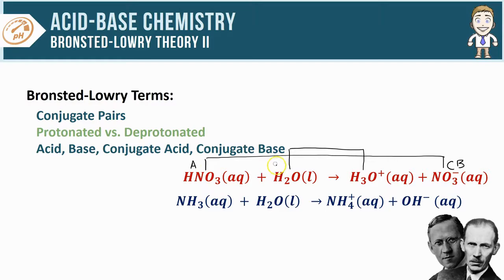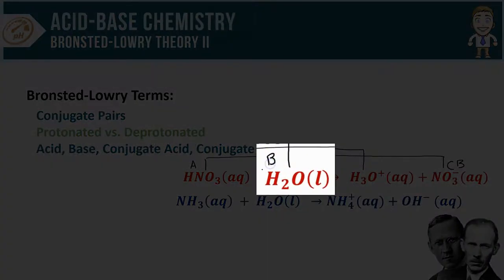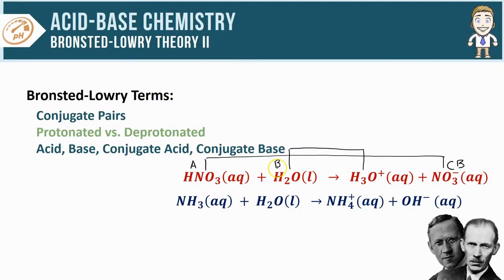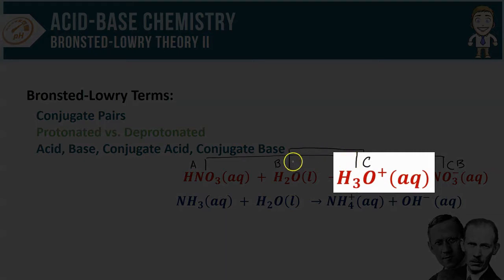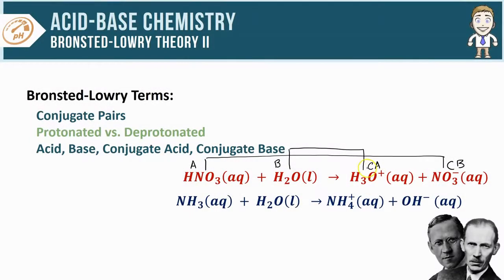Or accepting that H+ - in other words, water here is functioning as a base. Following a similar pattern, water's conjugate pair on the product side is given that label of conjugate, and it changes identity from base in the reactants to acid in the product. So H3O+ is the conjugate acid of the base H2O.